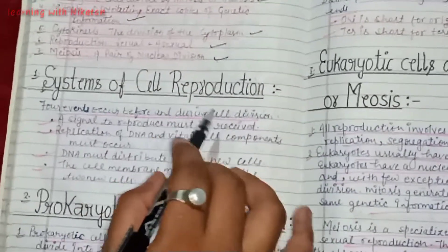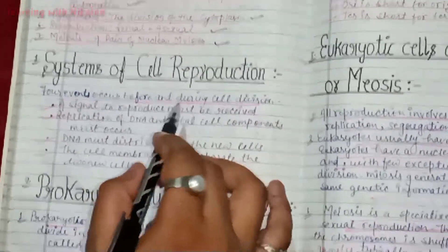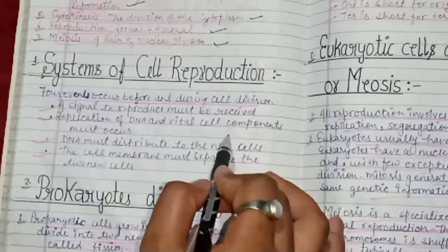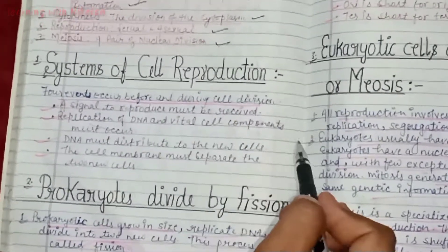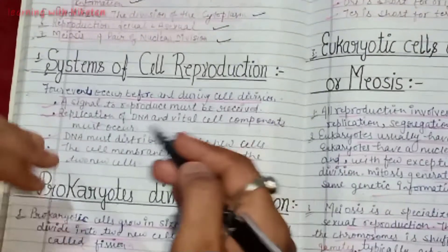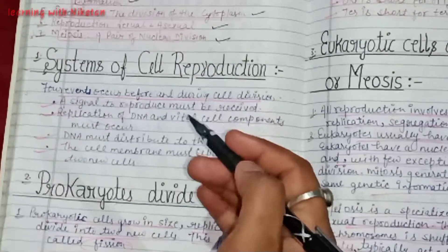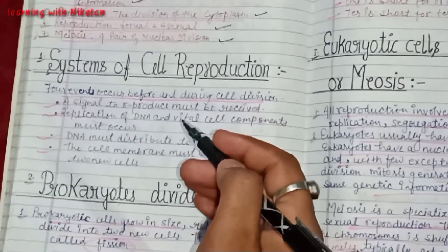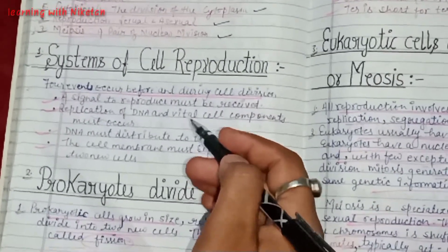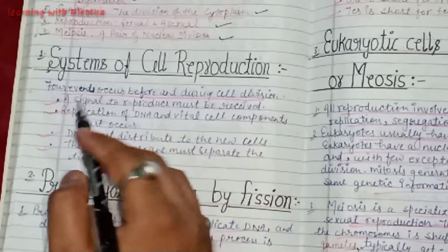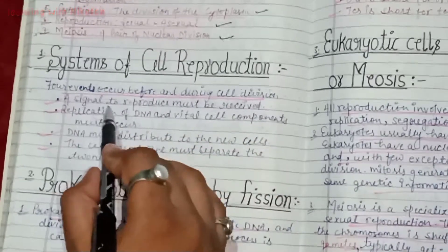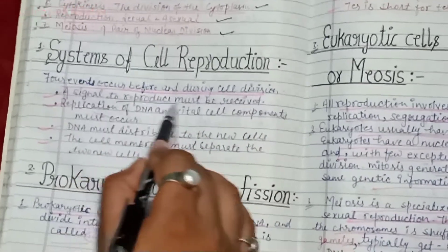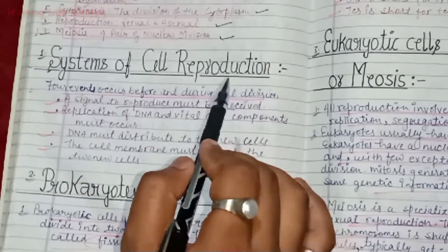So first we will start with the system of cell reproduction. Four events occur before and during cell division. Before the cell division, four events occur. These are the following: First one is a signal to reproduce must be received.